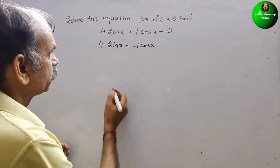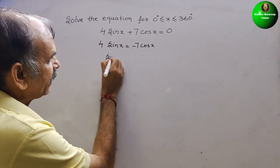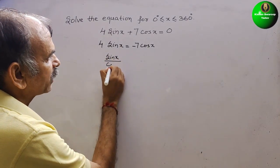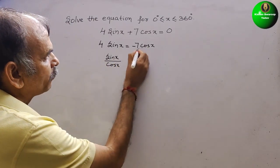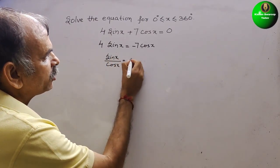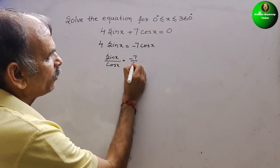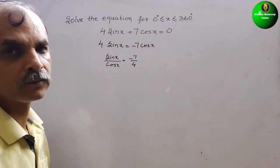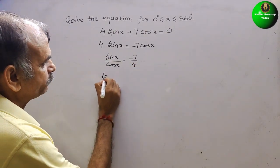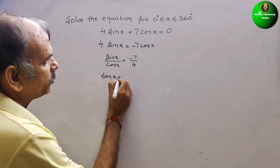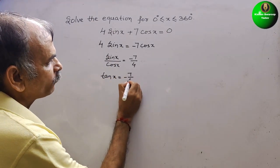Now we will make it as a tan x. How? See this: sin x by cos x. This will come down, that is equal to minus 7 by 4. So this is your tan x equals minus 7 by 4.